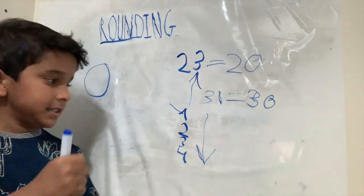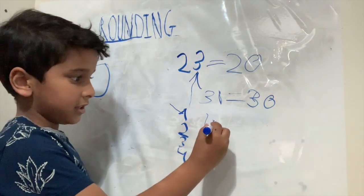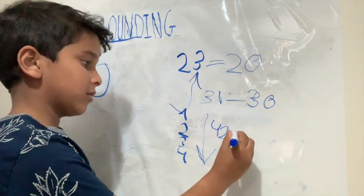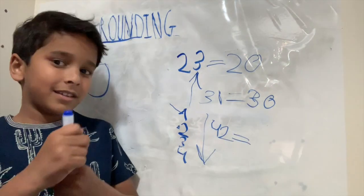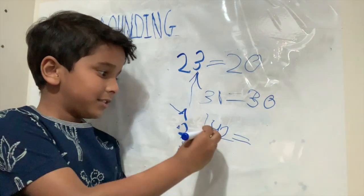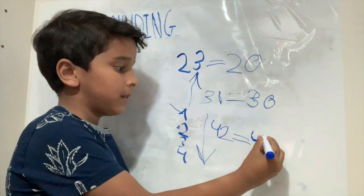Let's take another example. 42. It ends with 2. So rounded to the nearest ten, it will become 40.